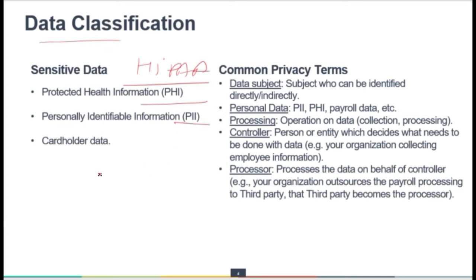PII is any data that could potentially be used to identify a particular individual from any other individual. Your full name, social security number, passport number, or email address are examples of data elements that are unique to you. Some data can be sensitive and some non-sensitive — for example, name and mobile numbers are publicly available and considered non-sensitive, while social security number and passport number are sensitive because they are not publicly available.